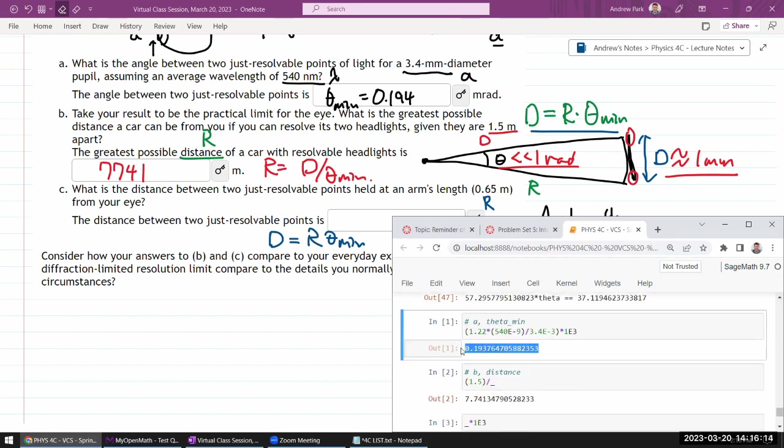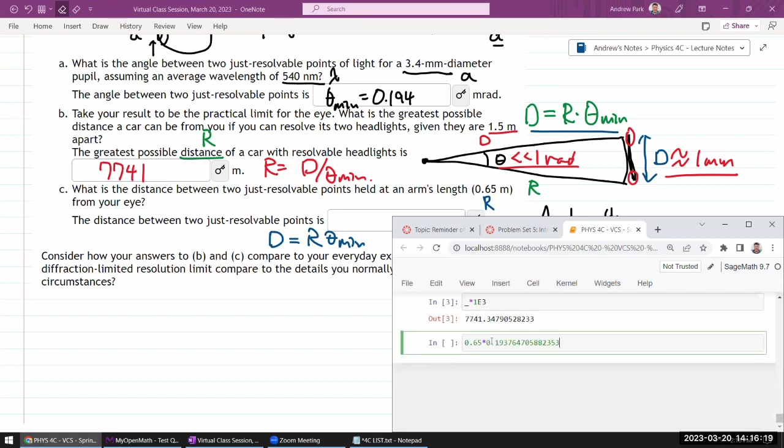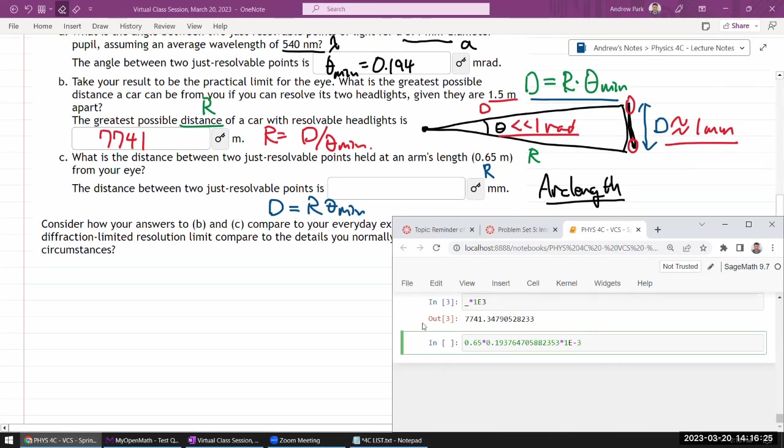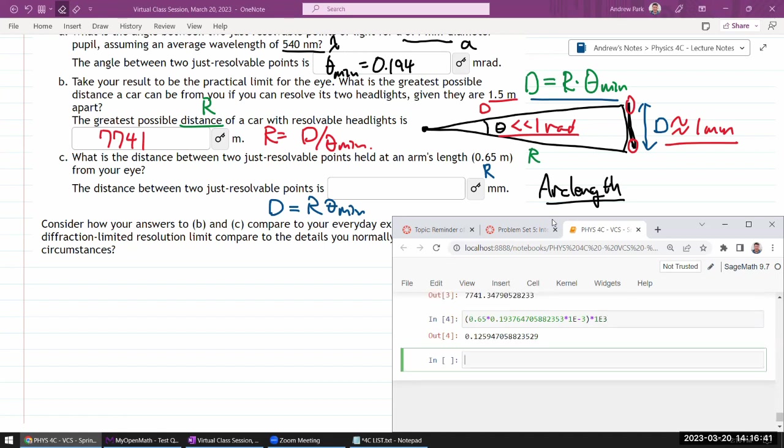I've done too many calculations. So this is my theta_min, and I'll just multiply it by 10 to the power of 3 so that I'm plugging it in radians, not milliradians. And after having done that, it'll give me an answer in meters. And apparently they want the answer in millimeters, so let me convert that back to millimeters by multiplying 10 to the power of 3. So 0.126 millimeters.